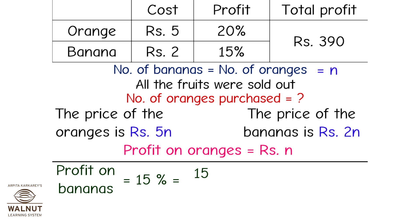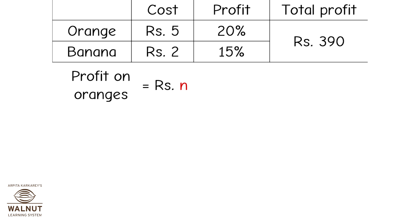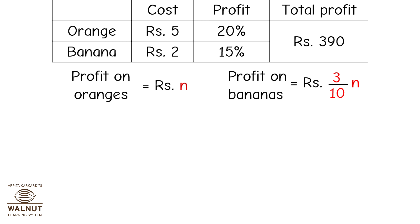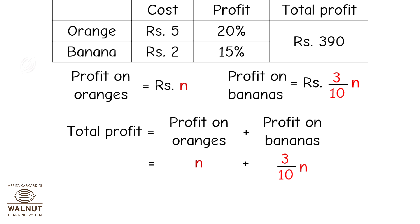Profit on bananas is 15%, which equals 15 upon 100 into 2n, therefore the profit on bananas is 3n upon 10 rupees. The total profit equals profit on oranges plus profit on bananas, which is n plus 3n upon 10, which equals 13n upon 10.